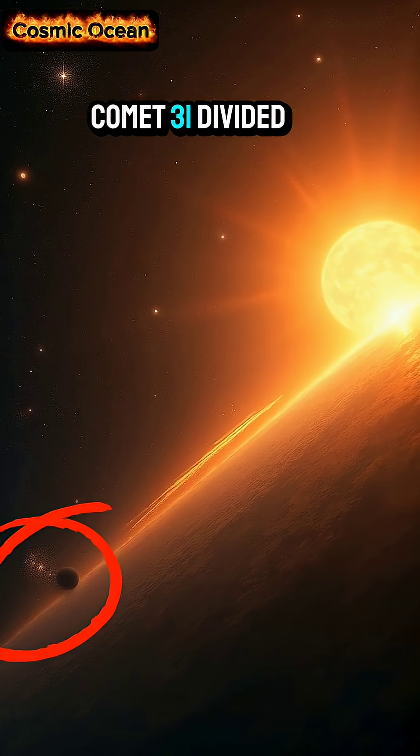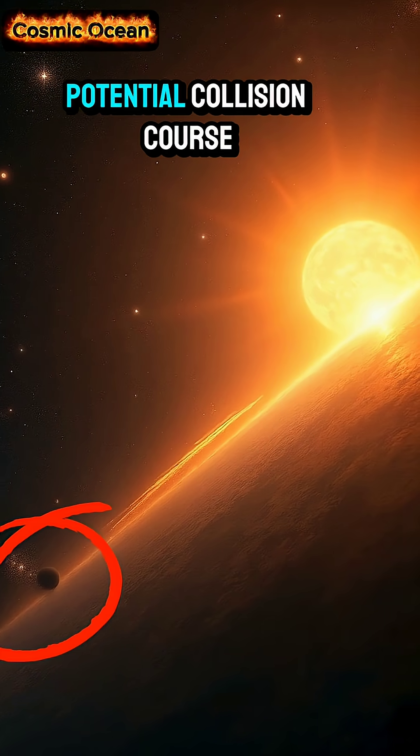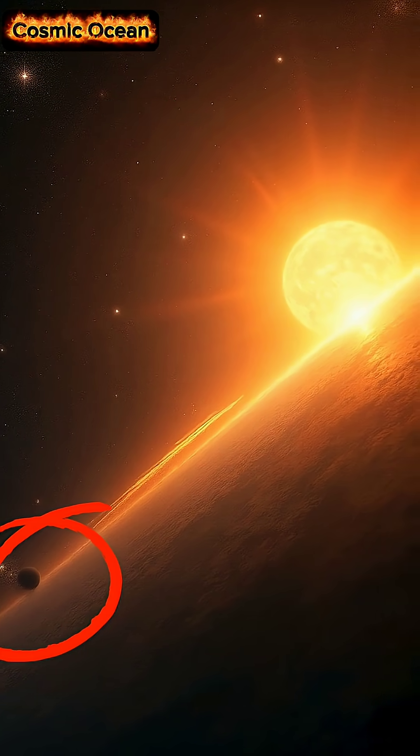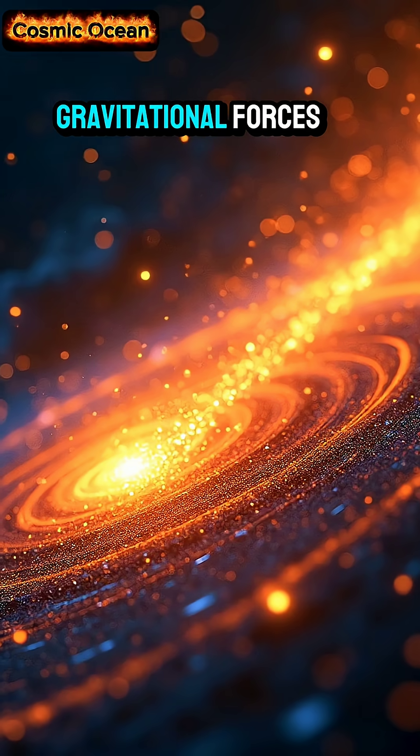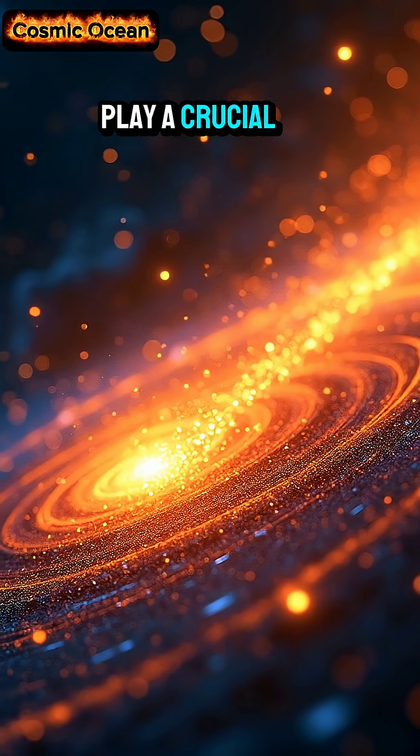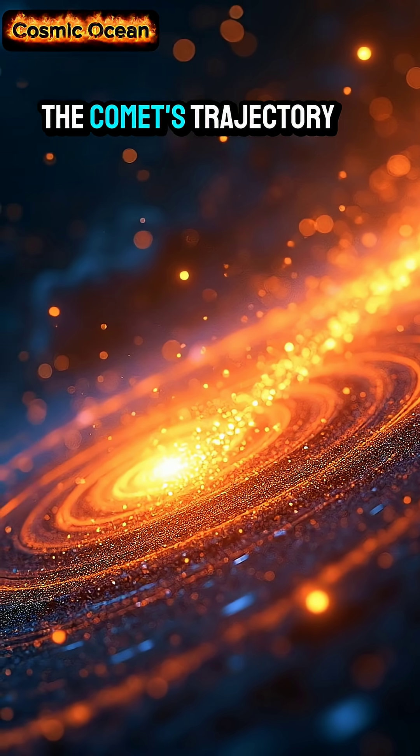Comet 31 divided by Atlas is on a potential collision course with the sun. The collision course is determined by the comet's orbital mechanics. Gravitational forces play a crucial role in shaping the comet's trajectory.